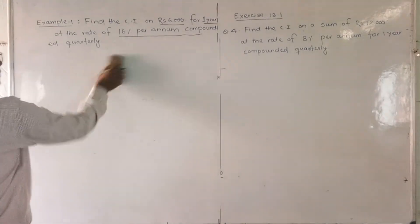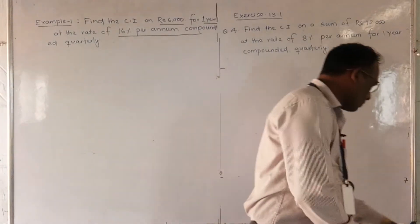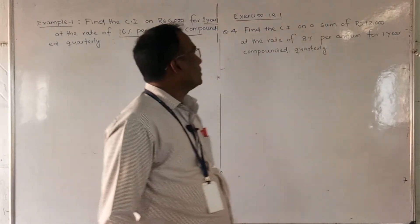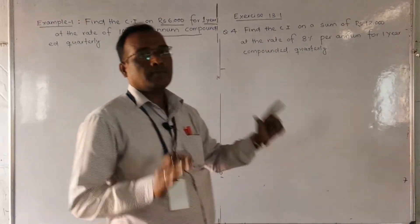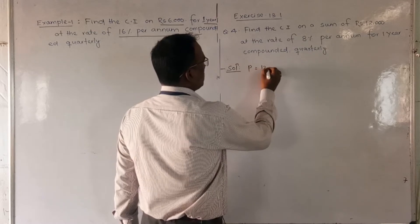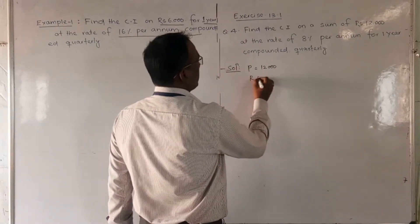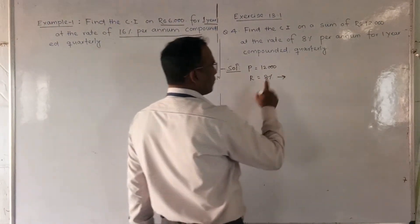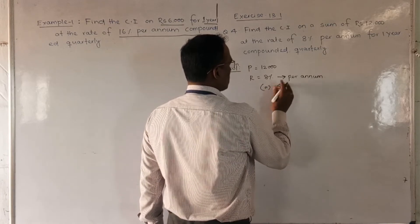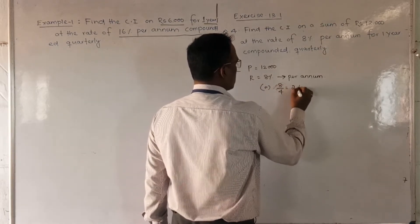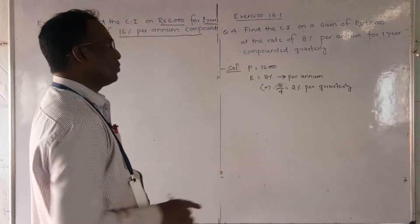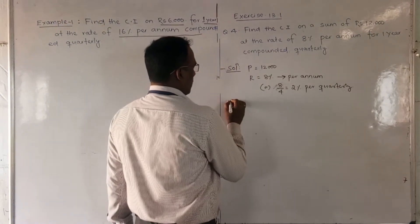Now let's do an exercise problem — Exercise 13.1, Question 4: Find the compound interest on the sum ₹12000 at the rate of 8% per annum for one year, compounded quarterly. Since it is quarterly, the rate per quarter = 8% ÷ 4 = 2% per quarter, and one year means four quarters.